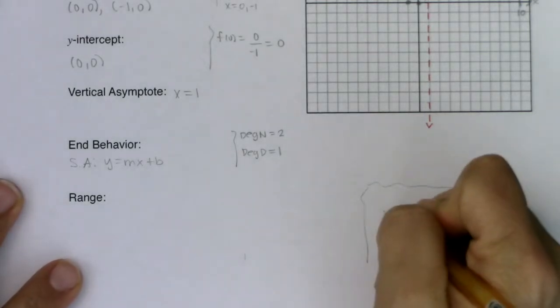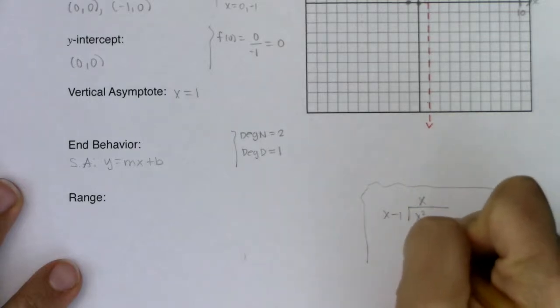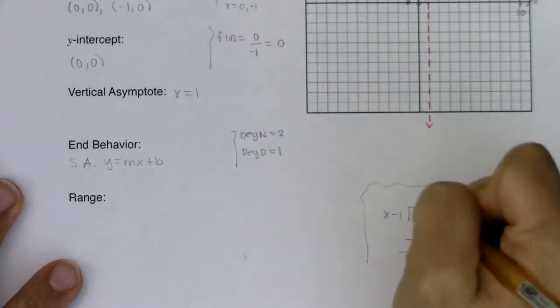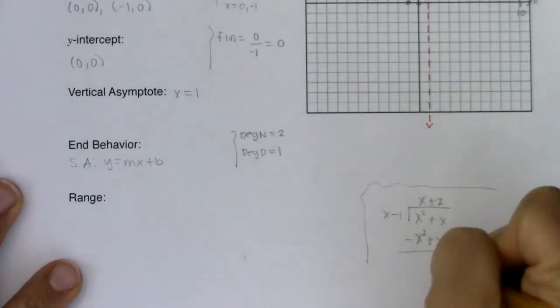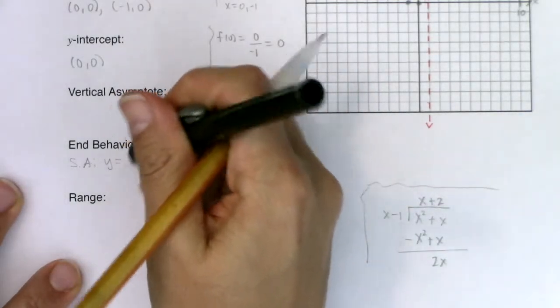So I need to divide x minus 1 into x squared plus x. I just need the mx plus b once I have that I'm going to cut and run. What do I need to multiply x by to get to x squared? X. So this would be x squared minus x, subtract that binomial, this adds to 2x so I've got x to 2x multiplied by 2. There's my slant asymptote y equaling x plus 2.